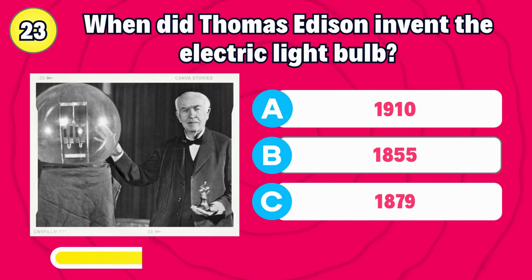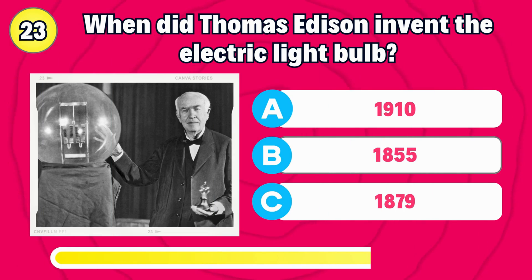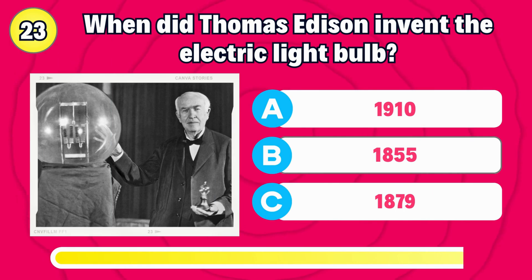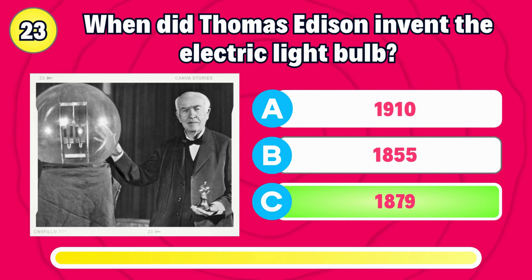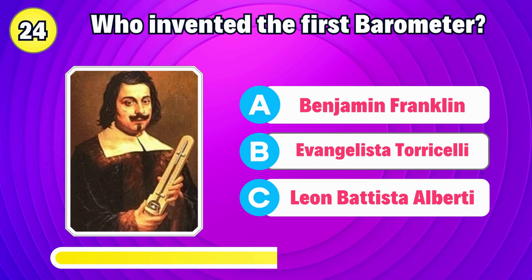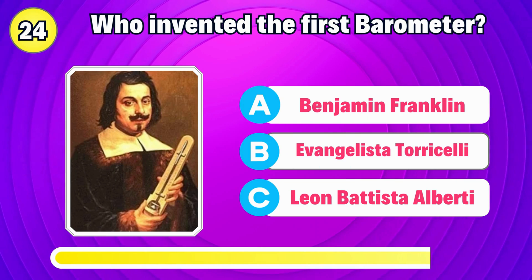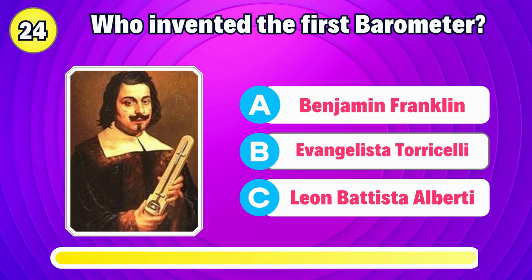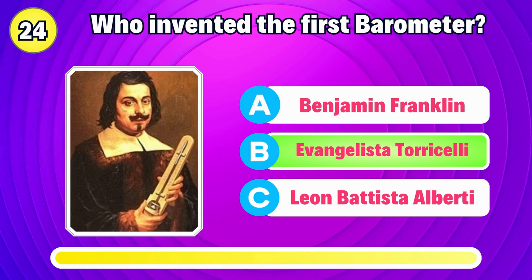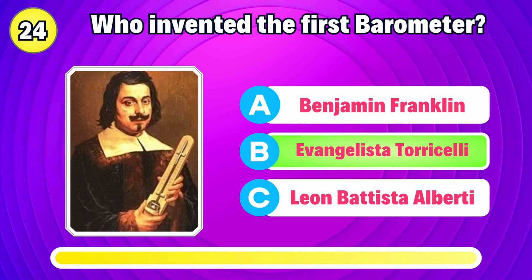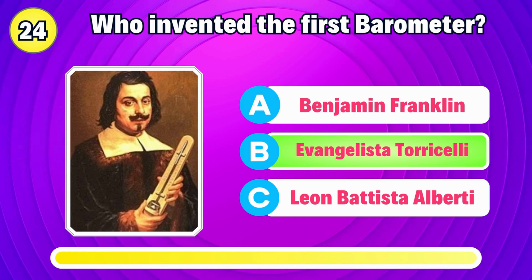When did Thomas Edison invent the electric light bulb? Right, in the year 1879. Who invented the first barometer? The answer is Evangelista Torricelli.